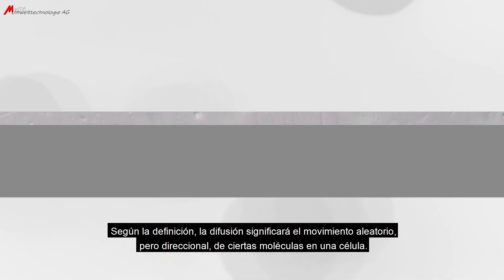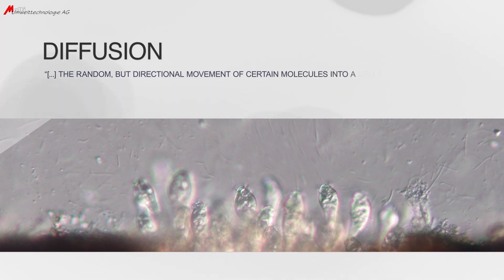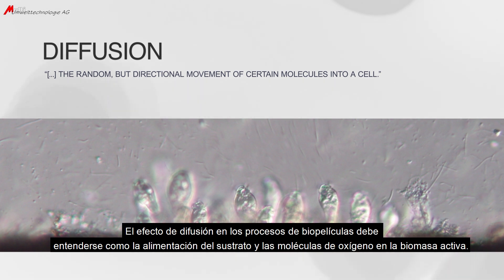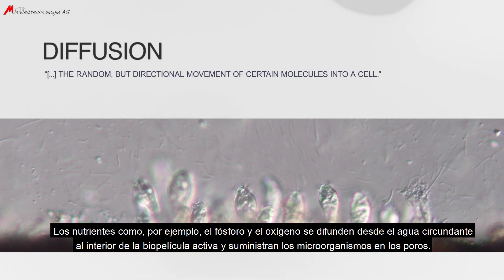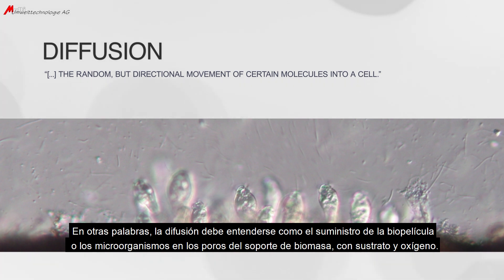As per the definition, diffusion shall mean the random but directional movement of certain molecules into a cell. The diffusion effect in biofilm processes is to be understood as the feed of substrate and oxygen molecules into the active biomass. Nutrients such as phosphorus, as well as oxygen, diffuse from the surrounding water into the active biofilm and supply the microorganisms in the pores. In other words, diffusion is the supply of the biofilm or microorganisms on the carrier with substrate and oxygen.